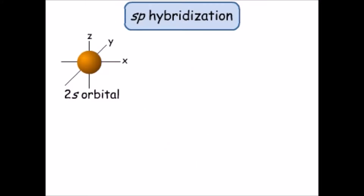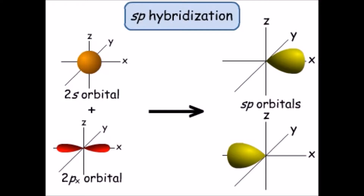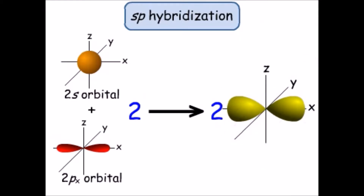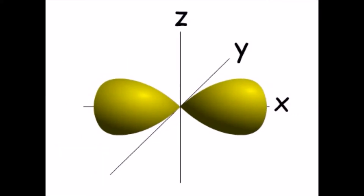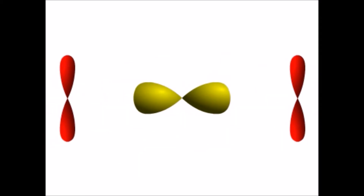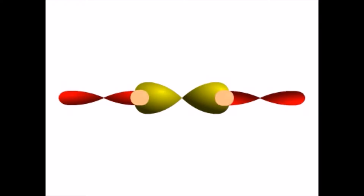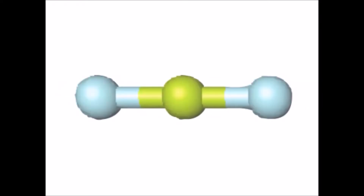If we hybridize the 2S orbital with the 2PX orbital in a beryllium atom, the result is a set of two SP hybrid orbitals. The number of hybrid orbitals is always the same as the total number of contributing atomic orbitals. These two SP orbitals point in exactly opposite directions. To make a molecule of beryllium fluoride, we need a beryllium atom with SP hybridization and two fluorine atoms, each with one electron in a P atomic orbital. The P orbital from each fluorine atom overlaps with an SP hybrid orbital in the beryllium atom, forming this linear molecule with beryllium at the center.